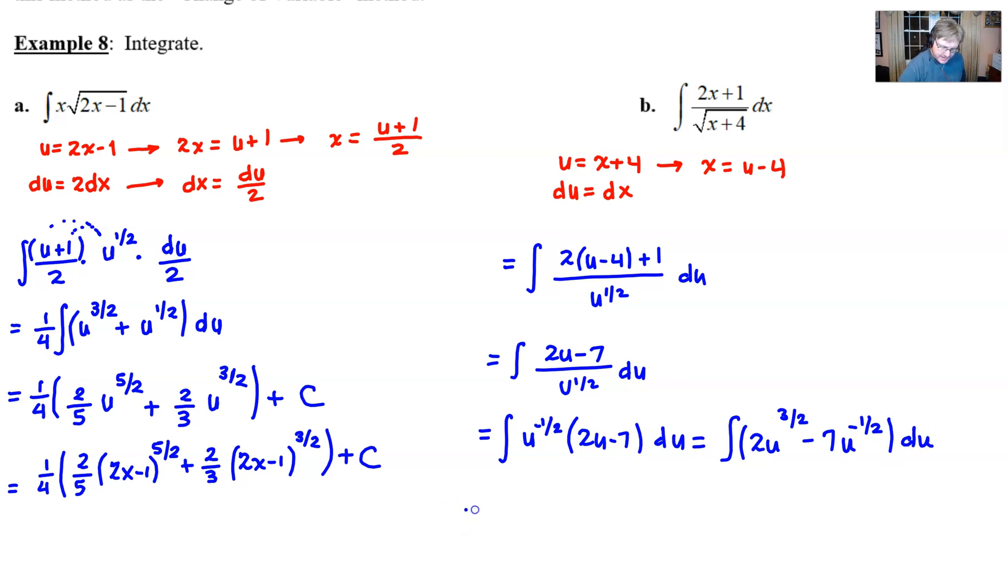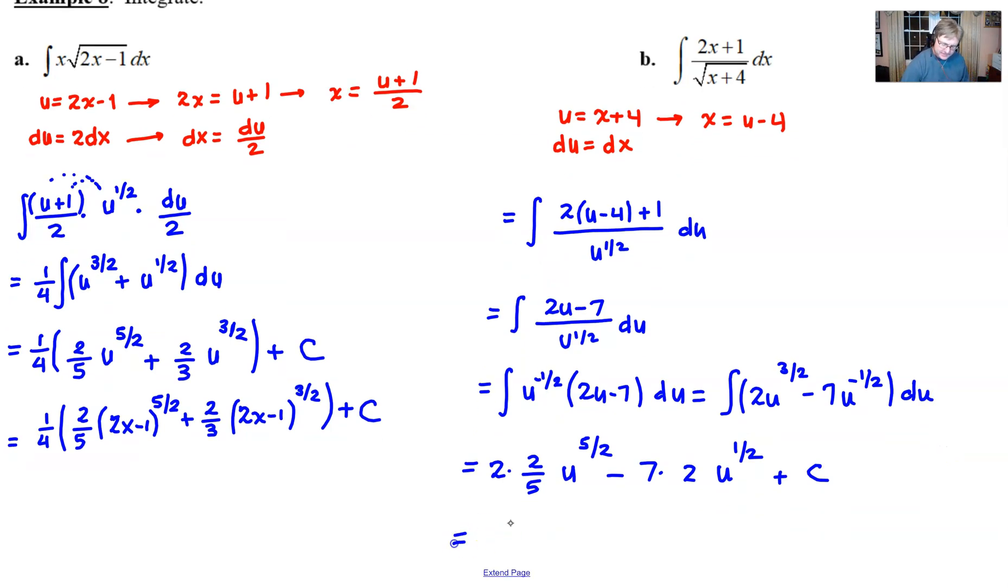So the 2 drops out in front, the u to the three halves will raise its power up to the five halves. I'll just decide to multiply by two fifths. And then I subtract 7, same thing, add one to negative one half, multiply by the reciprocal of the one half, which is 2. There I go. And really the only thing left to do is just cosmetically combine some things and then back substitute. x plus 4 is your value of u, and here you go.